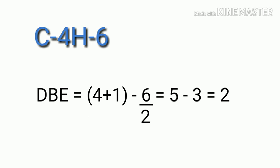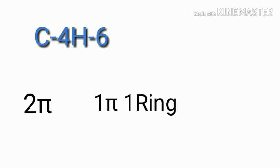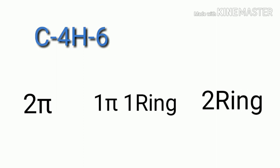A double bond equivalent value of 2 from the molecular formula could mean: 2 pi bonds, 1 pi bond and 1 ring, or 2 rings. So we can predict possible isomers from the double bond equivalent value.